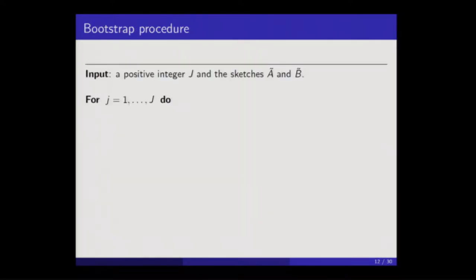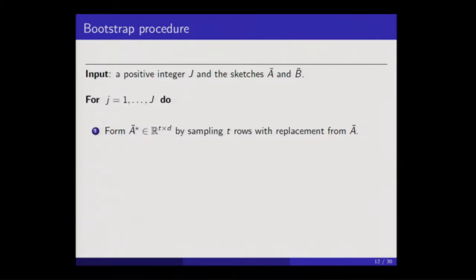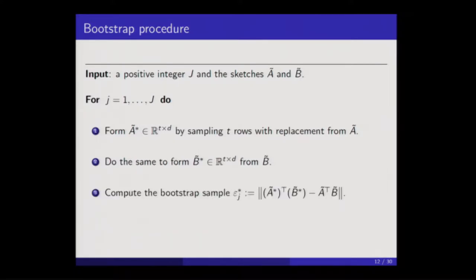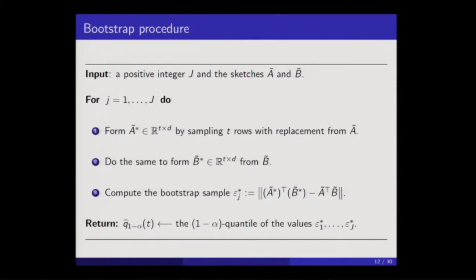Here is the proposal. I fix an integer J — the number of bootstrap samples to generate — and the only other inputs are the sketches A-tilde and B-tilde. This algorithm never needs to touch the original input matrices. In a loop: the first step involves forming a matrix A-tilde-star of the same size as A-tilde by sampling the rows of A-tilde with replacement; similarly for B-tilde-star. Then I take the difference between the starred product and the unstarred one, evaluate my norm of choice on that, giving a bootstrap version of the error variable. When the loop is done, I collect these bootstrapped error variables and take the desired quantile.